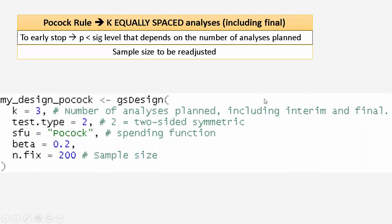The first one, POCOCK rule. We have a library called GSDesign in R, which is Group Sequential Design. Here K is the number of analyses planned, including the interim and final analysis. We put here two, which is two-sided symmetric test. Here's the spending function we use POCOCK. When you run the function, you will get the following output.